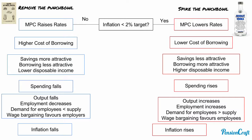As a result, output increases, employment increases, and the demand for employees grows more quickly than the supply of employees. That means wage bargaining favours employees, which can also lead to wage inflation. If the MPC removes the punch bowl by raising rates, everything goes in reverse. Spending falls and inflation falls.